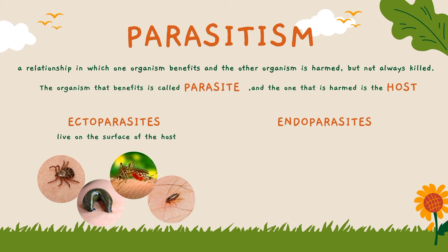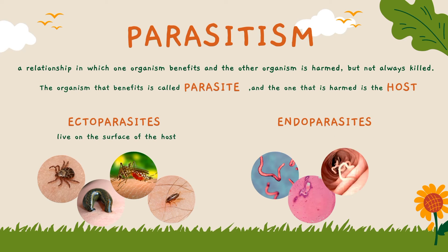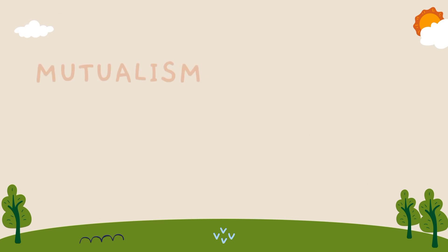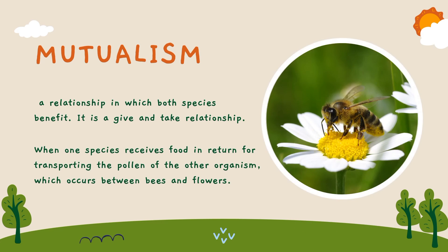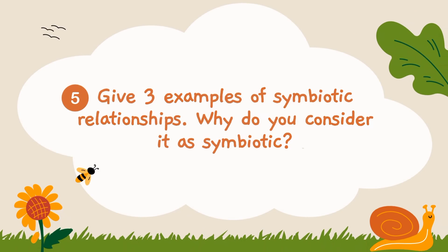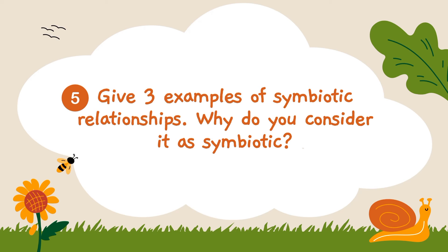Parasites can also be endoparasites such as intestinal worms that live inside the host. Another example of symbiotic relationship is mutualism. It is a relationship in which both species benefit — it is a give-and-take relationship. For example, the relationship between bees and flowers: bees receive food in return for transporting the pollen. Give at least three examples of symbiotic relationship and tell us why you consider it as symbiotic.